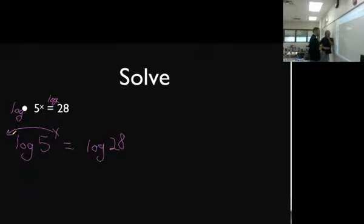So, log of 5^x equals the log of 28. And then, what happens to this x there? Where does it go when that happens? Well, you could bring this x out in front. That was one property you taught us. You can bring the x out in front.